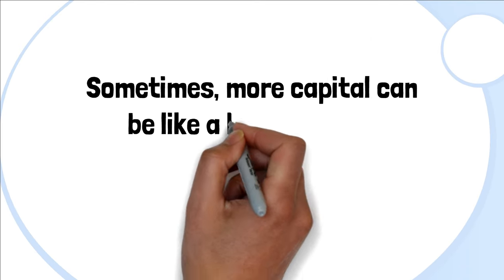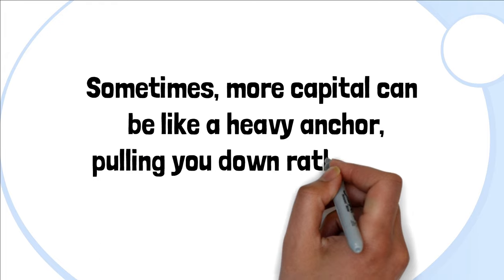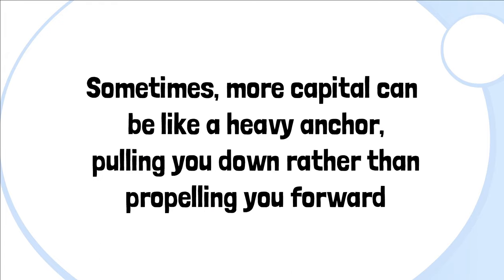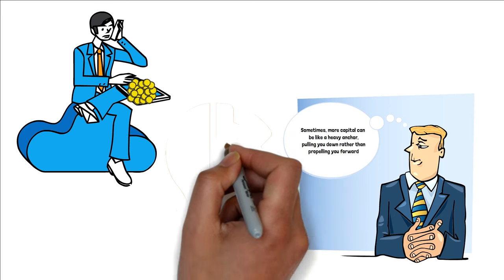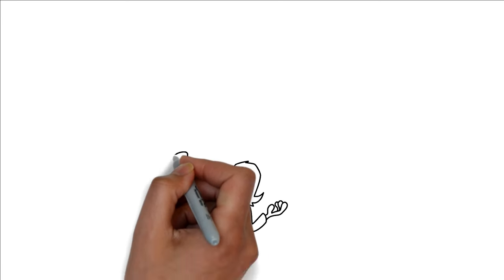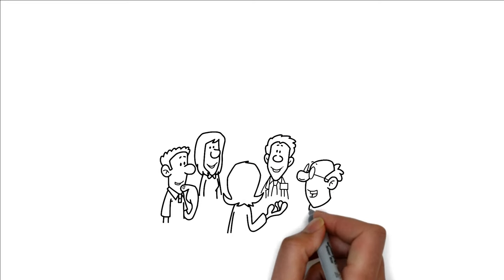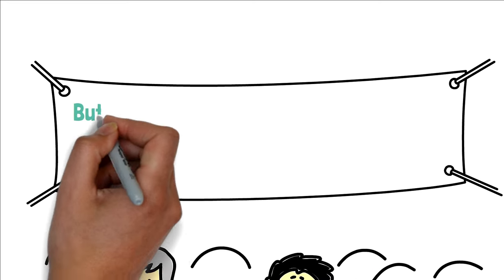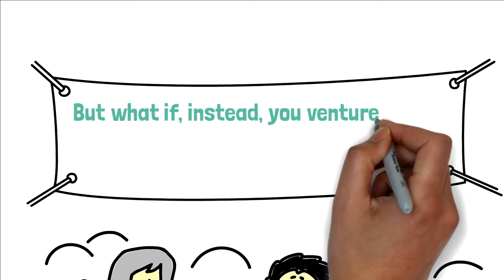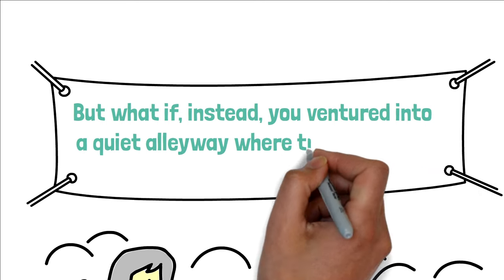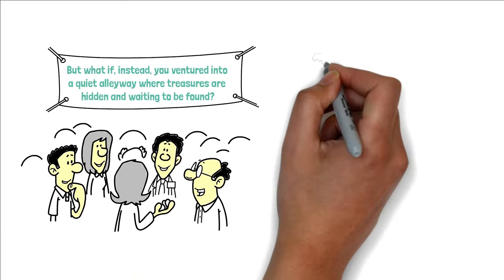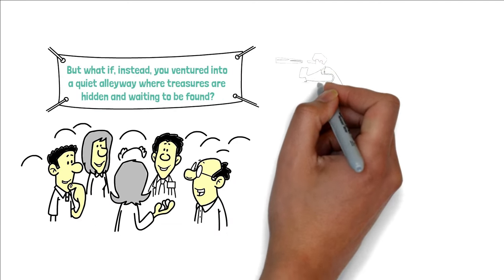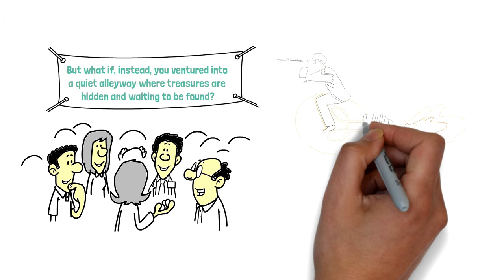Sometimes more capital can be like a heavy anchor, pulling you down rather than propelling you forward. Here's the golden nugget from Munger's treasure chest. Larger markets are like bustling bazaars where everyone's shouting and trying to grab the best deals. But what if instead you ventured into a quiet alleyway where treasures are hidden and waiting to be found?